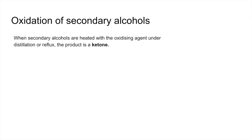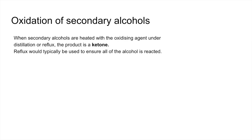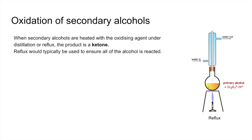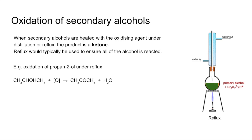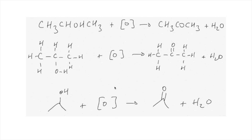Finally, the oxidation of secondary alcohols — tertiary alcohols can't be oxidized. When secondary alcohols are heated with the oxidizing agent under distillation or reflux, the method doesn't matter, and the product is a ketone. Reflux is typically used to ensure all the alcohol reacts. For example, propan-2-ol is oxidized to propanone. This ketone can't be oxidized any further, so the reaction finishes there.